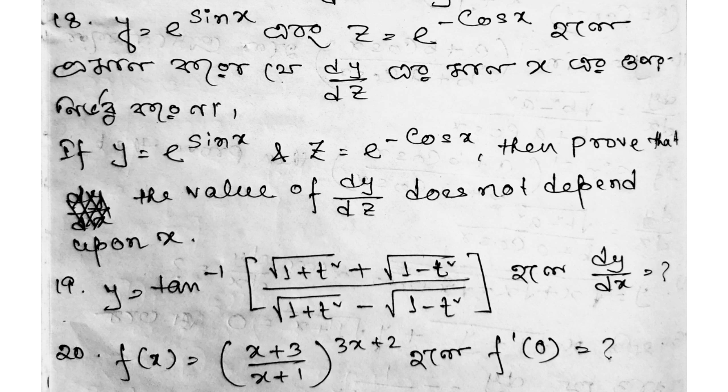Question 17: y equals tan inverse of (root over (1 plus t squared) plus root over (1 minus t squared)) divided by (root over (1 plus t squared) minus root over (1 minus t squared)), find dy/dx. Question 18 (last question): f(x) equals ((x plus 3) divided by (x plus 1)) to the power (3x plus 2), find f'(0), i.e., the first order derivative at 0.